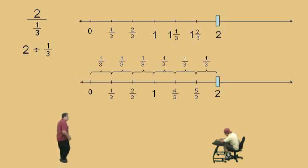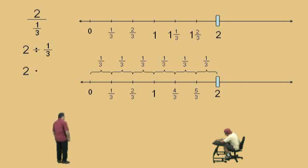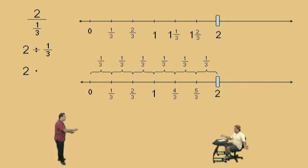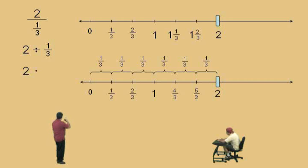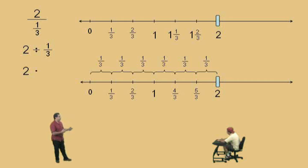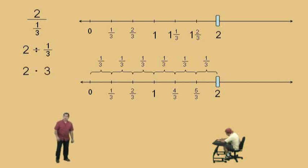So let's look at the arithmetic procedure. What we do is we bring our 2 down, and we're going to change division to multiplication. Why do we change division to multiplication? And then what do we do next, Charlie? Do the reciprocal. Well, why do we do that? We change division to multiplication, and now we have to take the reciprocal of 1/3. What's the reciprocal of 1/3? 3 over 1, which is 3.